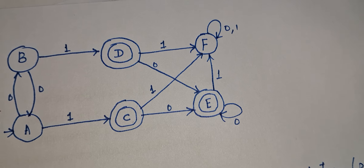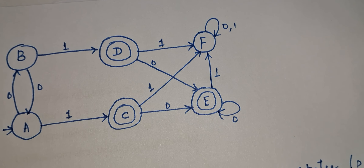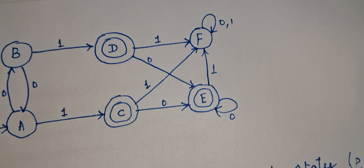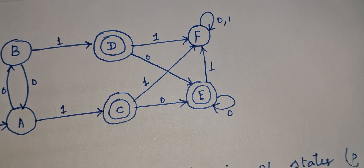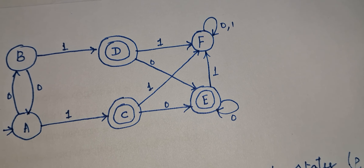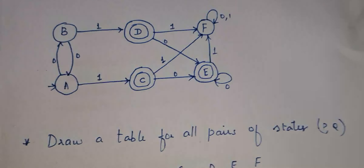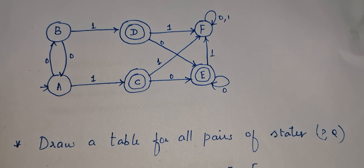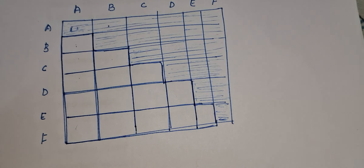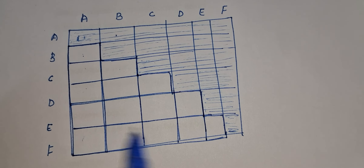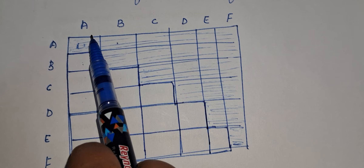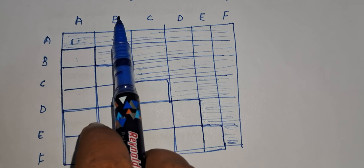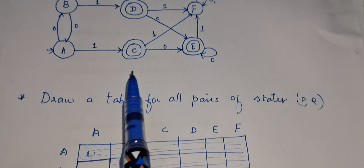In order to perform DFA minimization we need to follow a few steps. The first step is you should draw a table for all pairs of states — suppose P, Q. There are two states P and Q, we take the pair P, Q. So we should draw a table for all pairs of states. In order to construct the table you should write the state names. Here the state names are A, B, C, D, E, F — written row-wise and column-wise.